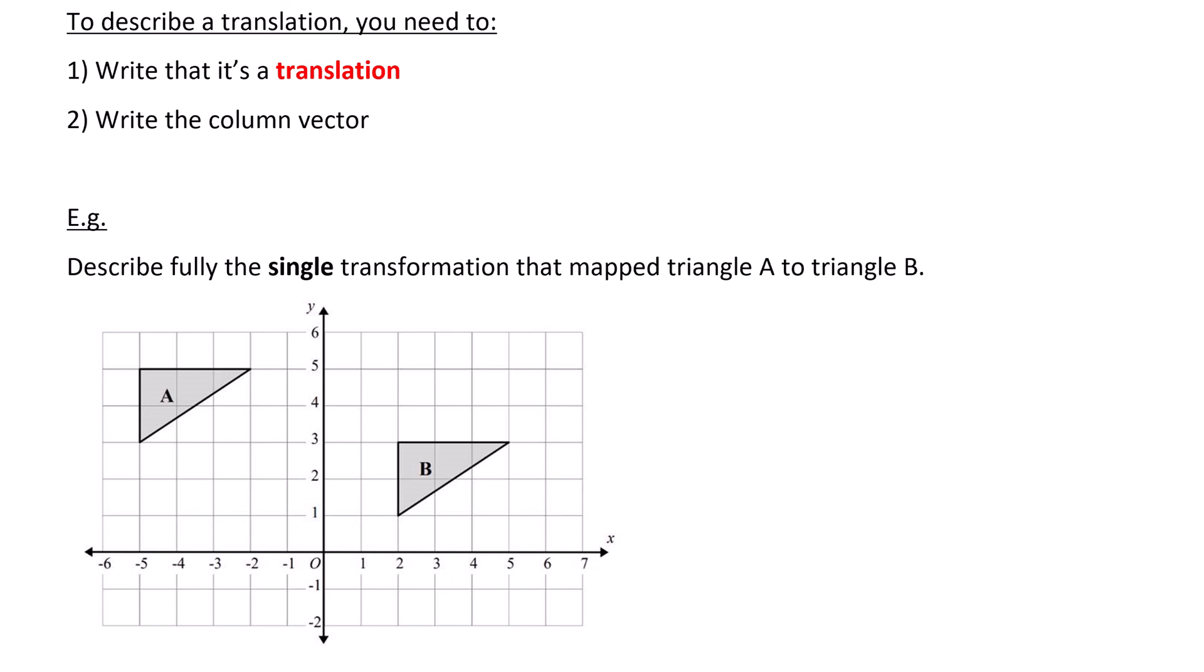So the way to do this is to pick one of the vertices, the same one, but on the different triangles, and then count the steps. Always start with the x step, so the right or left step, because that's the first number you're going to write.